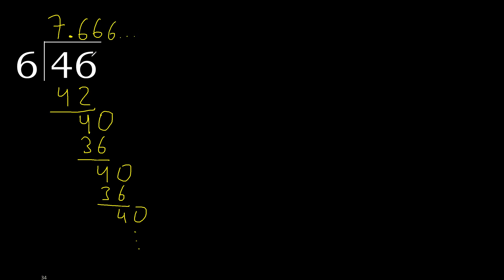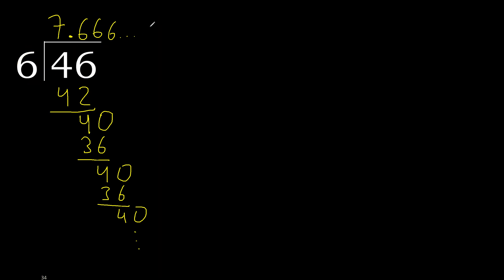46 divided by 6 is 7, and after the point the digit 6 repeats. Therefore the answer is like this: 7.6 repeating, or written like this. Ok, 1.